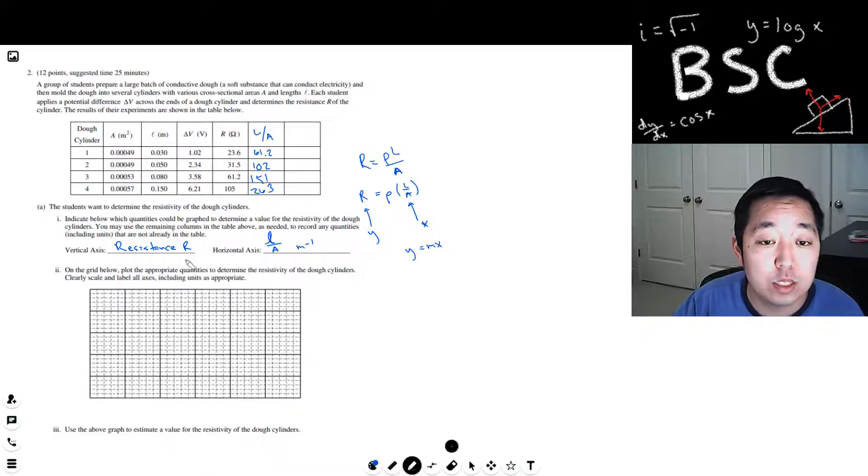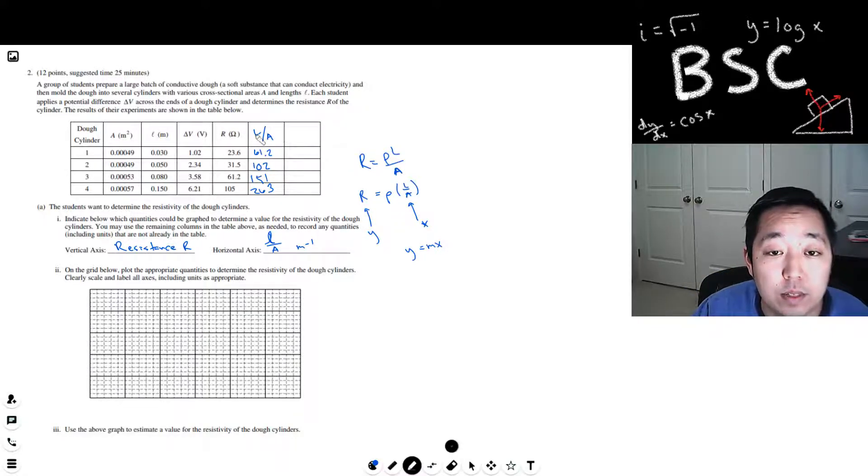Okay, so let's plot all these. So X axis is going to be L over A. I'm ranging from 61 to 263 and my resistance is going from about 23 to 105. So let's do the Y axis. If I went from about 20 to 120, that would be 20, 40, 60, 80, 100. Yeah, if I just started here like 20, 40, 60, 80, 100, 120, then I'll have enough to cover all the resistance values that I need.